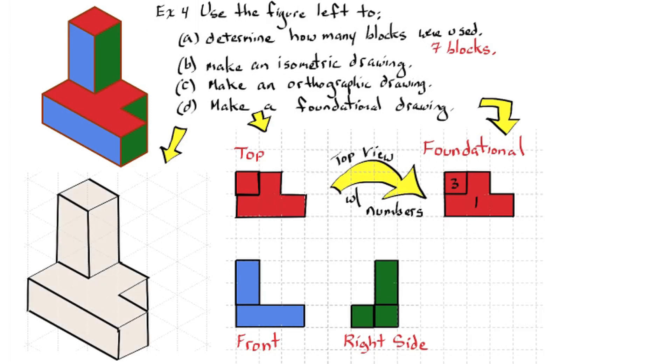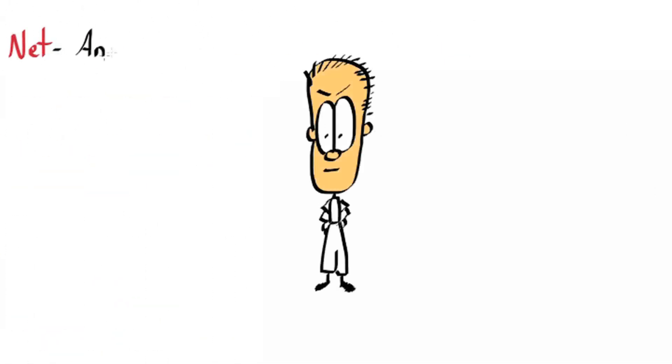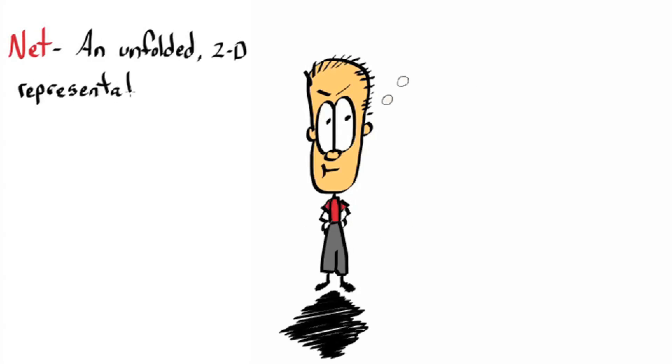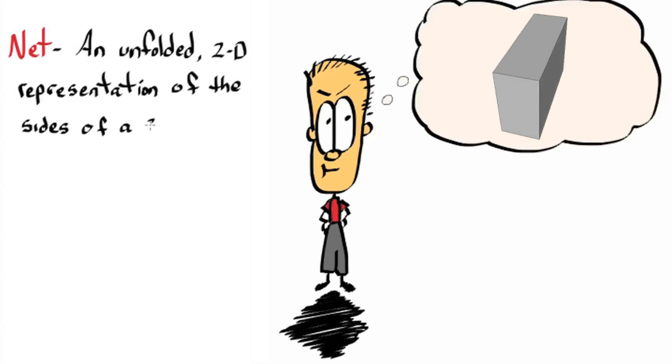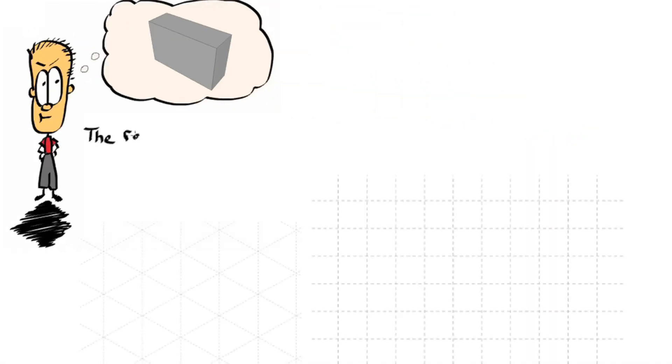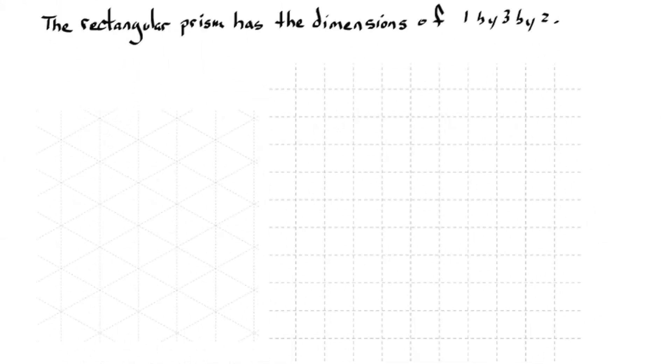Okay, let's look at our last drawing. The net. A net is an unfolded two dimensional representation of the sides of a three dimensional shape. So let's see what this looks like. The rectangular prism has the dimensions of one by three by two. So I'm going to make an isometric drawing of this prism, and then I'll make the net.